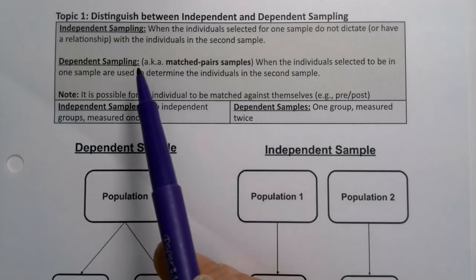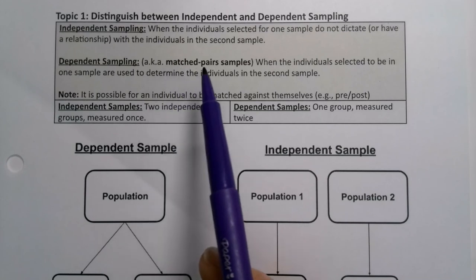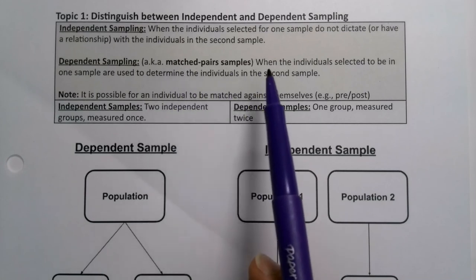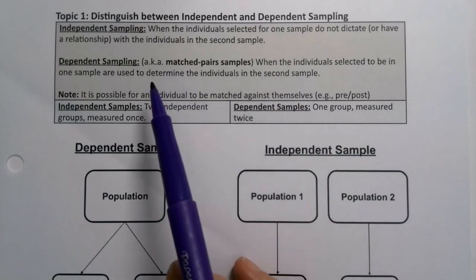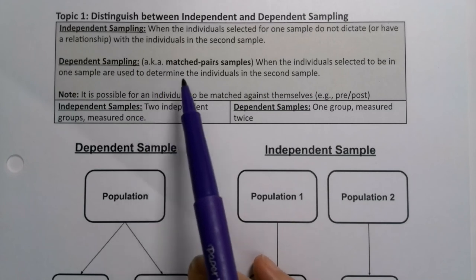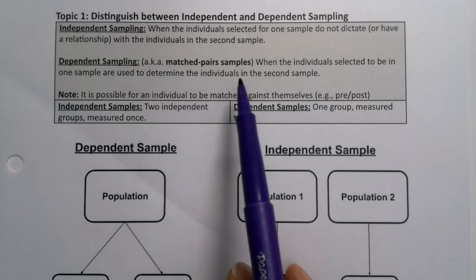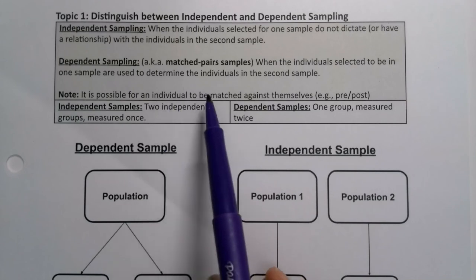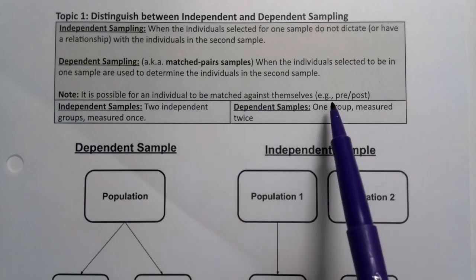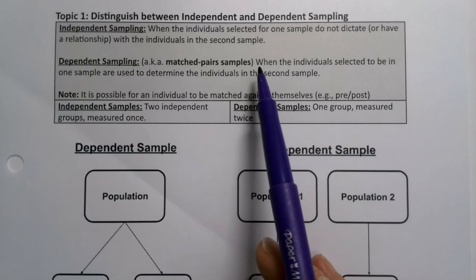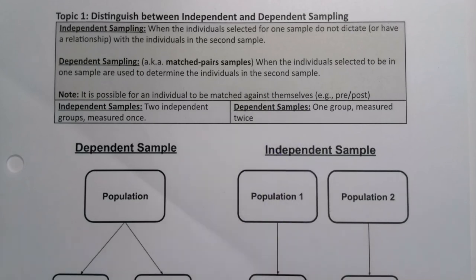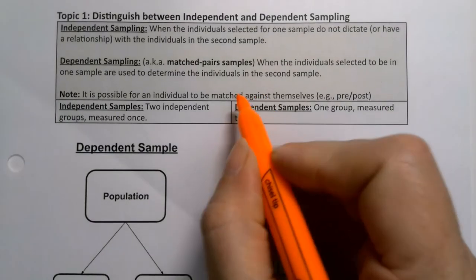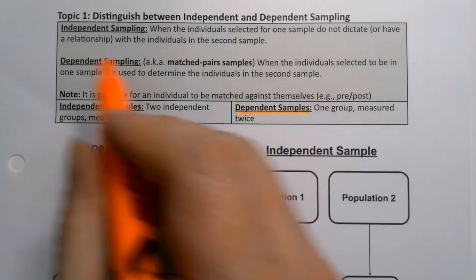And then there's dependent sampling, which is also known as matched pairs sampling. That's when the individuals selected to be in one sample are used to determine the individuals in the second sample. It is possible for one individual to be matched against themselves — if you think of a pre-test and a post-test, that's dependent sampling. When you have one group measured twice, that is dependent sampling.